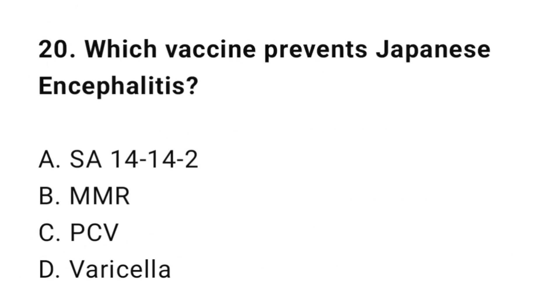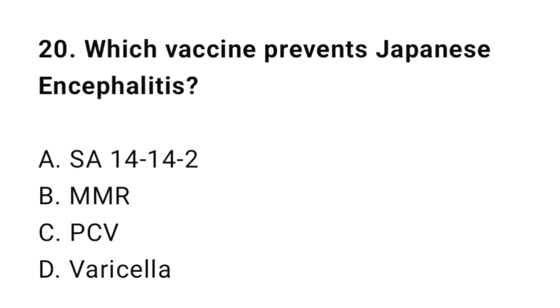Question number twenty: Which vaccine prevents Japanese encephalitis? The correct option is A: SA14-14-2.